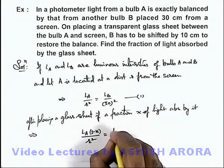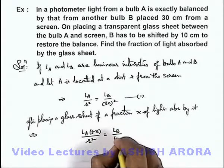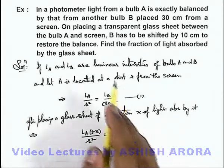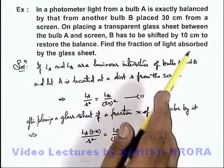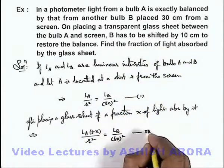This must be balanced by LB divided by 40 square, because now to balance this intensity B has to be shifted by 10 centimeters. This is equation 2.